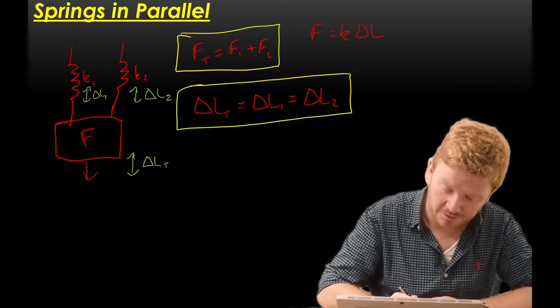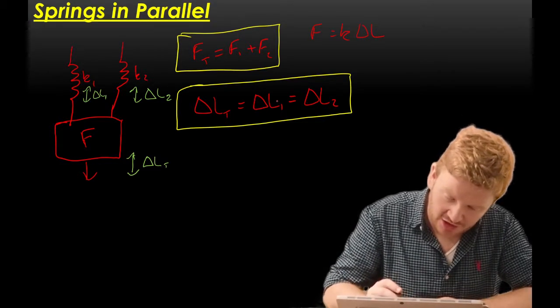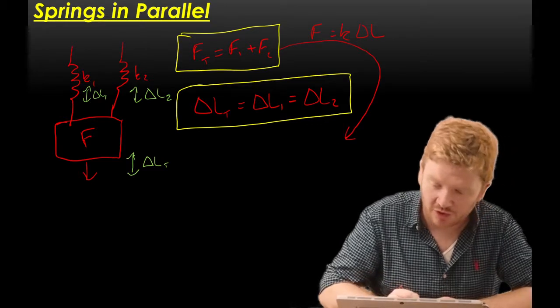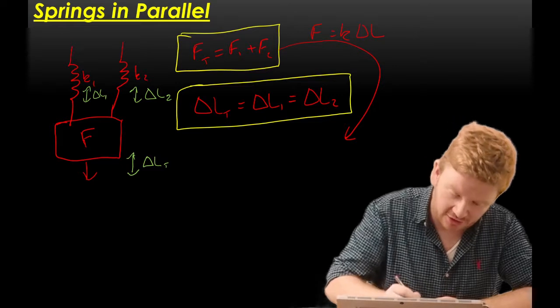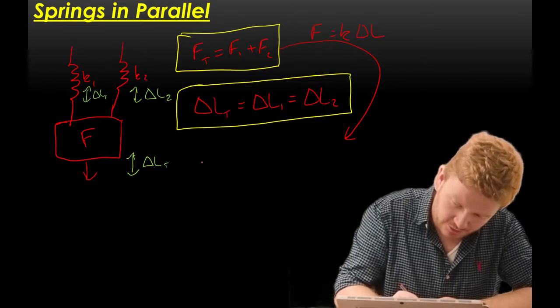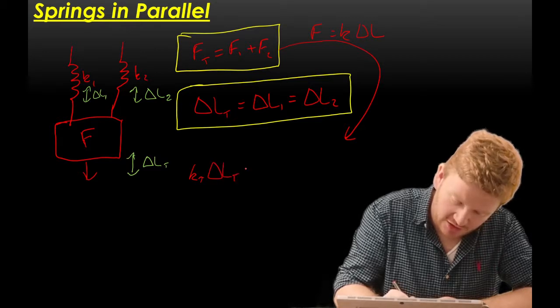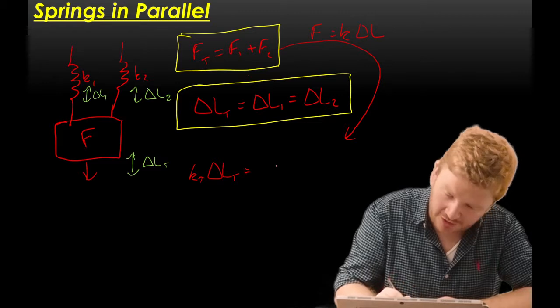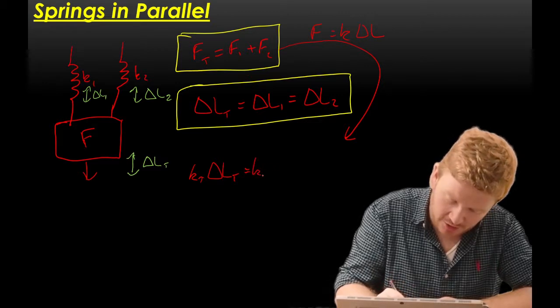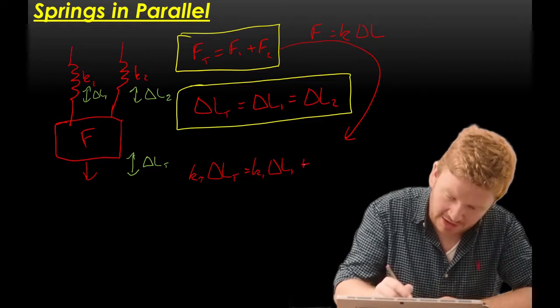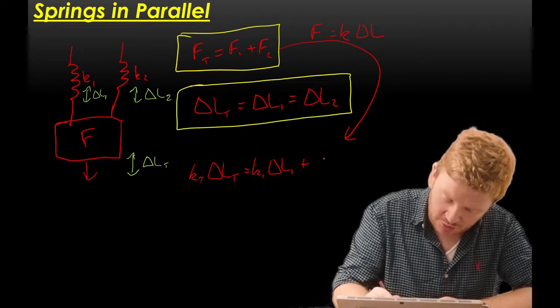Well, now what I'm going to do is rewrite my force equation in terms of k delta L. So that becomes the total spring constant times the total extension. That's equal to F1. Well, F1 is k1 times the extension of spring 1. And then I'm going to add to that spring 2.